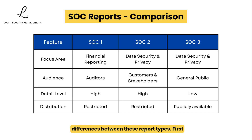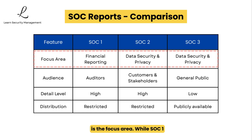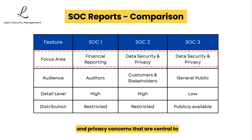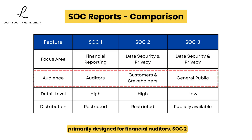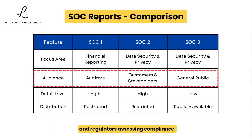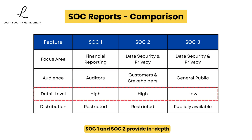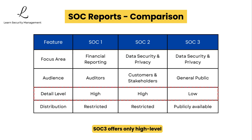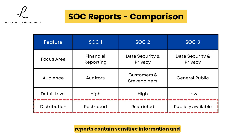Let's summarize the key differences between these report types. First, focus area: SOC 1 concentrates only on financial controls, while both SOC 2 and SOC 3 address broader security and privacy concerns central to cybersecurity. SOC 1 reports are primarily designed for financial auditors; SOC 2 reports are intended for businesses evaluating vendors and regulators assessing compliance; SOC 3 reports are designed for marketing and public consumption. Both SOC 1 and SOC 2 provide in-depth technical details about controls and testing results, while SOC 3 offers only high-level summaries. SOC 1 and SOC 2 reports contain sensitive information requiring confidentiality agreements before sharing, whereas SOC 3 reports are specifically designed for public distribution without security risks.